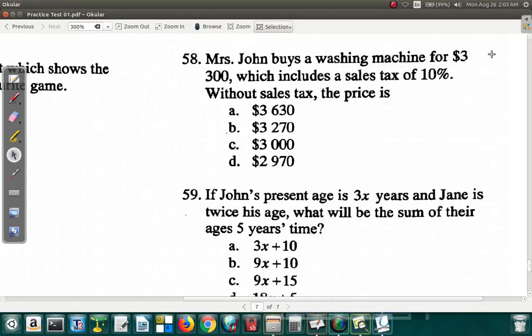Question 58. Mrs. John buys a washing machine for $3,300, which includes a sales tax of 10%. Without the sales tax, the price is... If it didn't have the sales tax, what would have been the price?